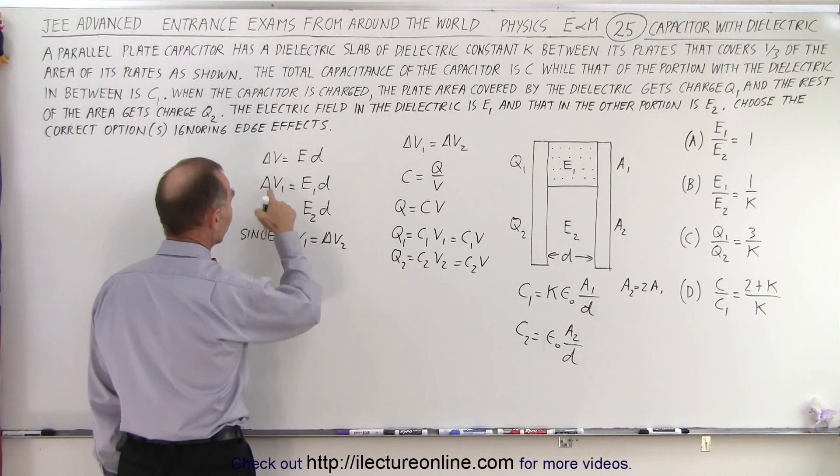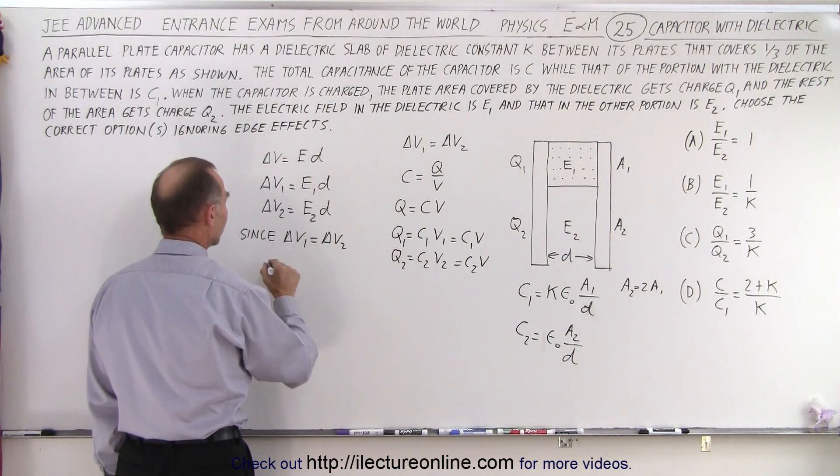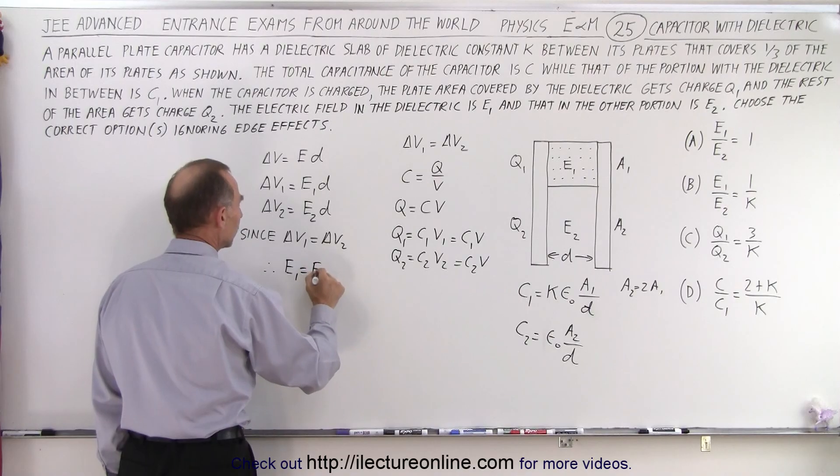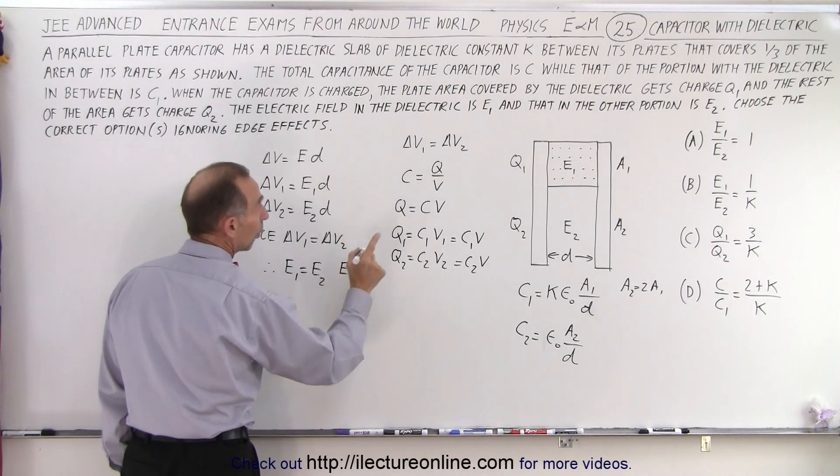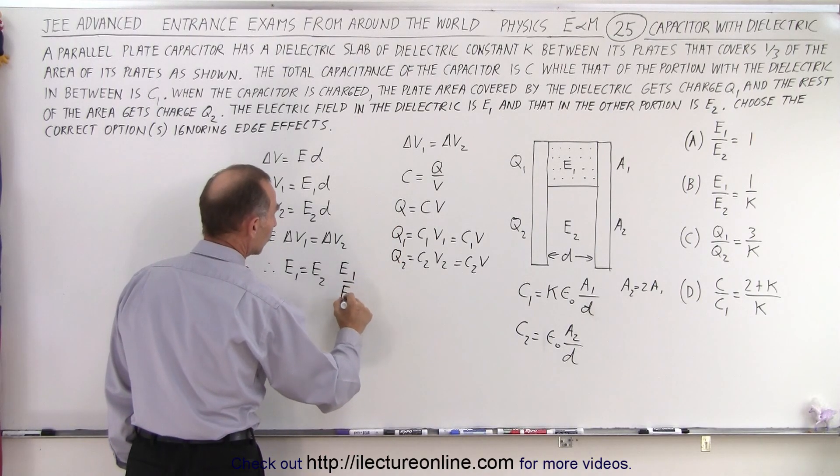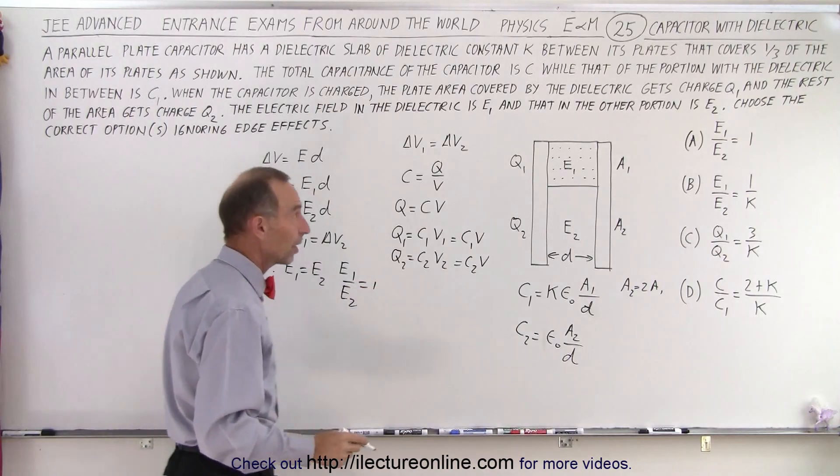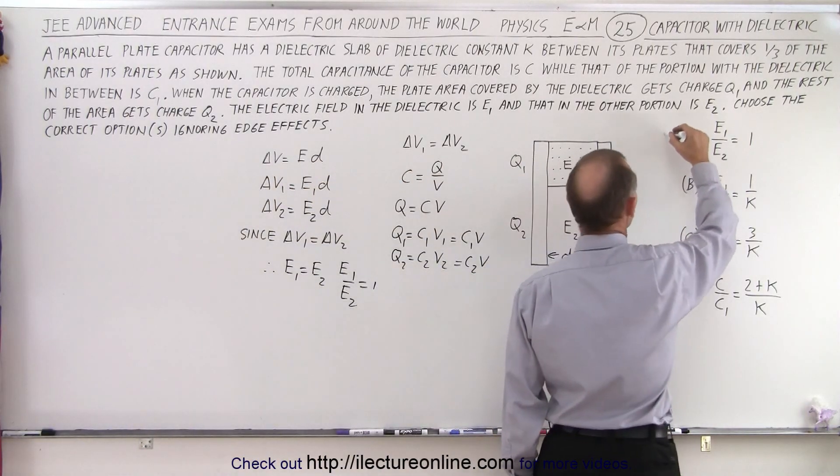then we know that therefore if these are the same and these are the same, therefore we know that E1 equals E2 or E1 divided by E2 is equal to 1. So it turns out that A is indeed correct.